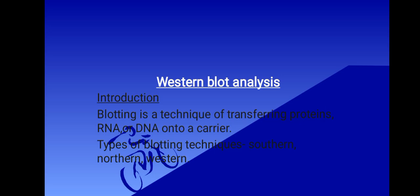We have various types of blotting: Southern blotting, Northern blotting, and Western blotting. Southern blotting is used to detect DNA, Northern blotting is used to detect RNA, while Western blotting is used to detect proteins.